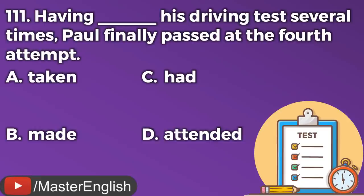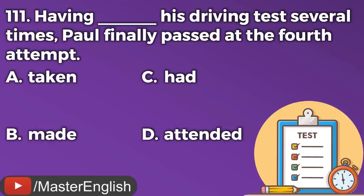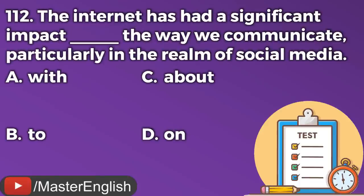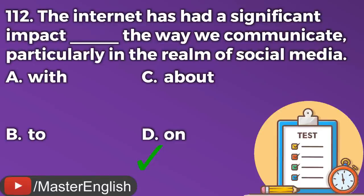Question number one hundred and eleven. Having ___ his driving test several times, Paul finally passed at the fourth attempt. A: Taken. B: Made. C: Had. D: Attended. The correct answer is A: Taken. Having taken his driving test several times, Paul finally passed. Question number one hundred and twelve. The internet has had a significant impact ___ the way we communicate, particularly in the realm of social media. A: With. B: To. C: About. D: On. The correct answer is D: On. The internet has had a significant impact on the way we communicate.